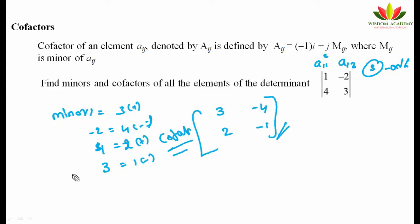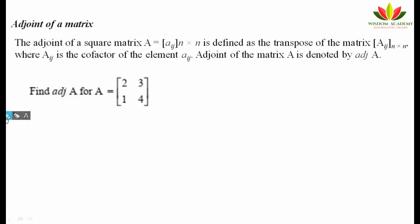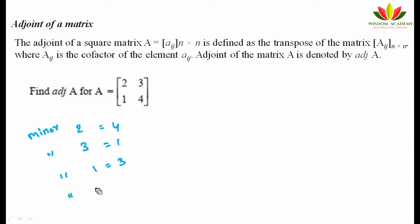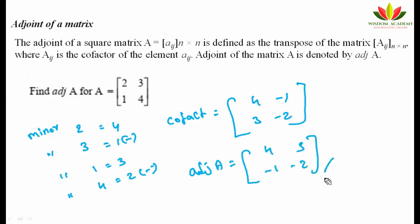The adjoint of a matrix is the transpose of the cofactor matrix. First find the minors: minor of 2 is 4, minor of 3 is 1, minor of 1 is 3, minor of 4 is 2. Applying signs, the cofactor matrix is [4, -1; 3, -2]. Therefore, the adjoint of A (transpose of cofactor) is [4, 3; -1, -2].